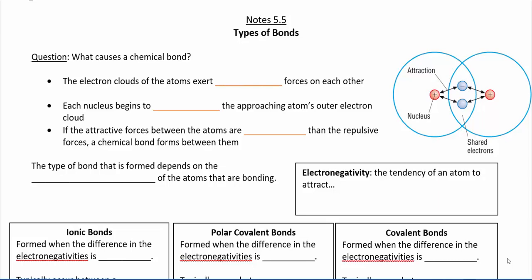The first question to think about is: what really causes a chemical bond? What causes two atoms to decide that they're going to stay fixed to each other? If we look at two hydrogen atoms, the nucleus is positively charged and it's surrounded by an electron cloud on the outside which is negatively charged.